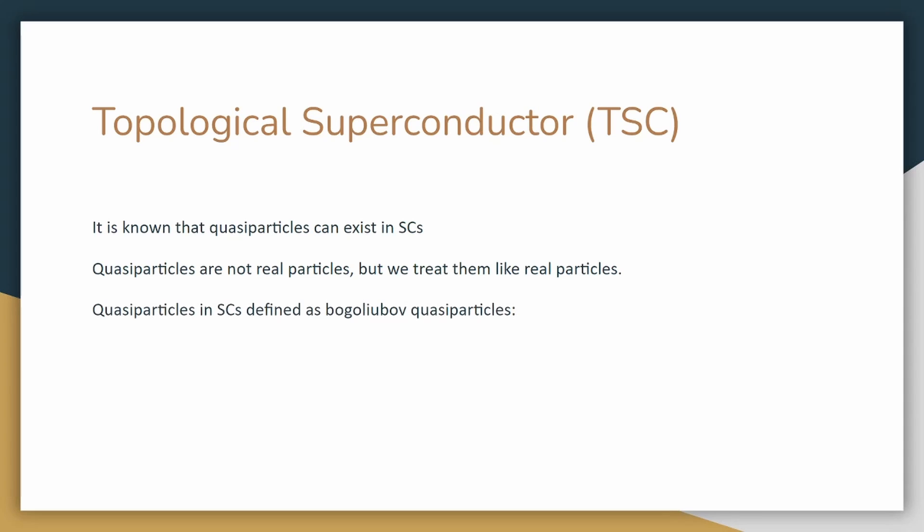In a superconductor, they are called Bogoliubov quasiparticles, described by the following equation. In topological superconductors specifically, it was suggested that a new particle can be found, the Majorana particle.